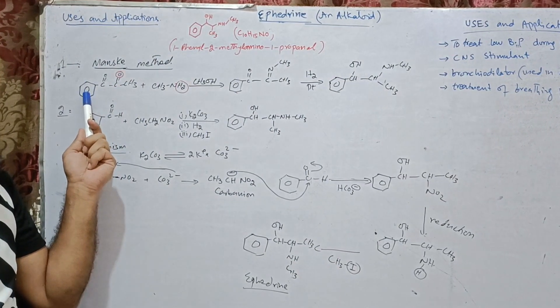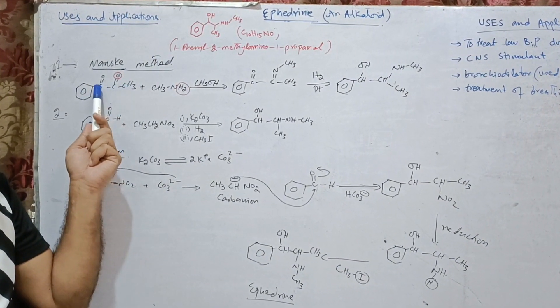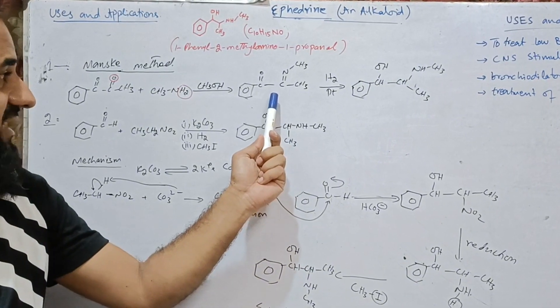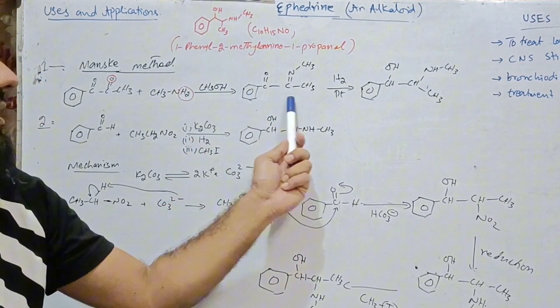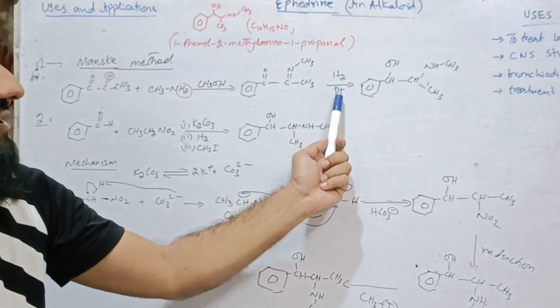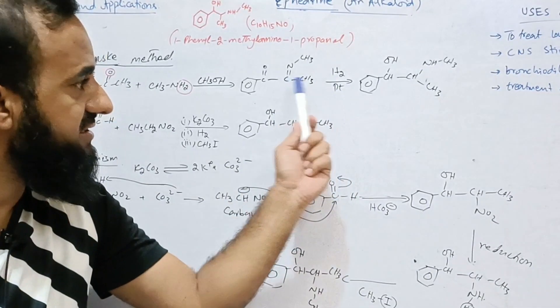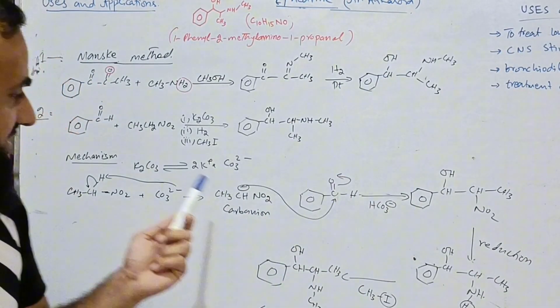we treat 1-phenyl-1,2-propanedione with methylamine to get this structure. And this reaction takes place in the presence of methanol. Now, this is reduced in the presence of hydrogen and platinum as catalyst. We get ephedrine.